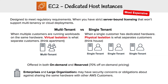To really understand dedicated hosts, we need to understand multi-tenant versus single-tenant. Whenever you launch an EC2 instance using on-demand or any of the other types besides dedicated hosts, it's multi-tenant, meaning you are sharing the same hardware as other AWS customers. The only separation between you and other customers is through virtualized isolation, which is software. Then you have single-tenant, where a single customer has dedicated hardware, and customers are separated through physical isolation.